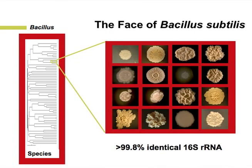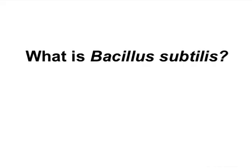These are all Bacillus subtilis — and not only are they Bacillus subtilis, they are greater than 99.8% identical at 16S ribosomal RNA gene sequence. That's much greater than the current cutoff for species inclusion for bacteria, which is about 97%. So it really got me thinking: what does it mean to be part of a bacterial species as we define it today? What is Bacillus subtilis?